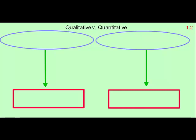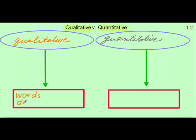There are two major branches of statistics, qualitative and quantitative. In the first, these would be qualitative words or descriptions. In contrast, quantitative data are numbers.